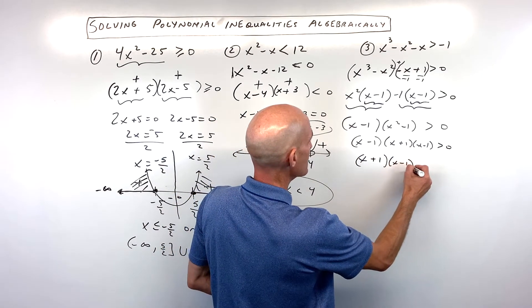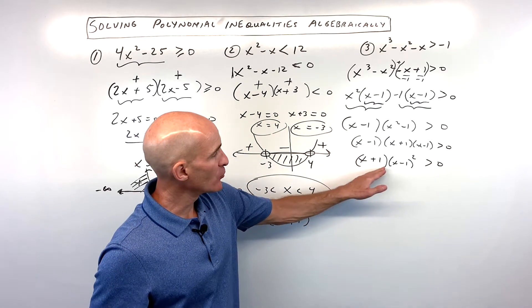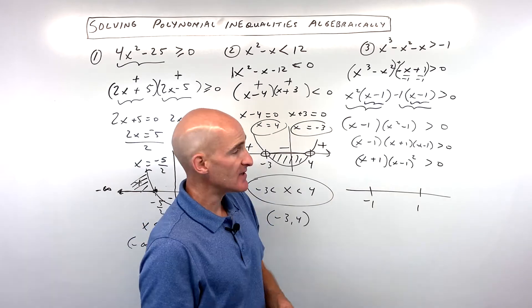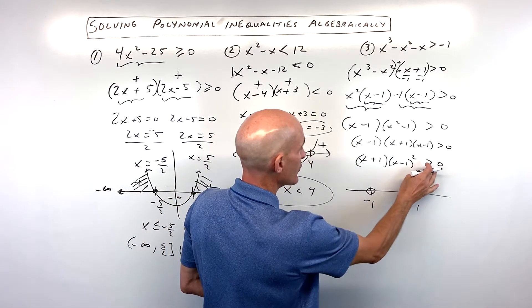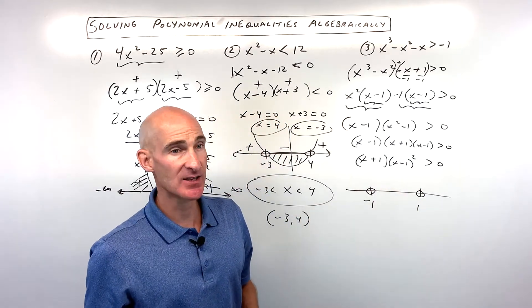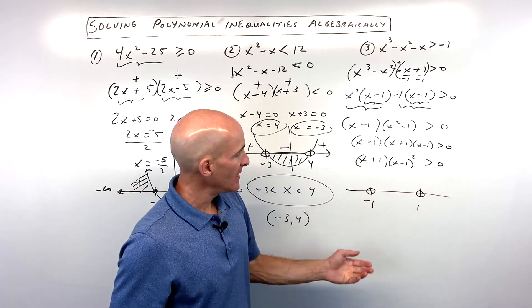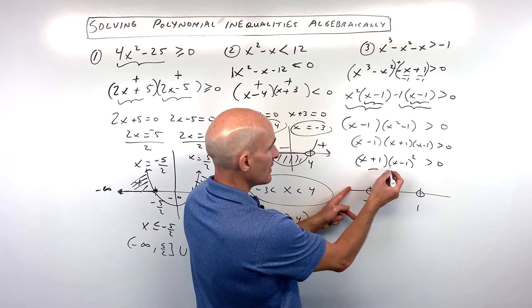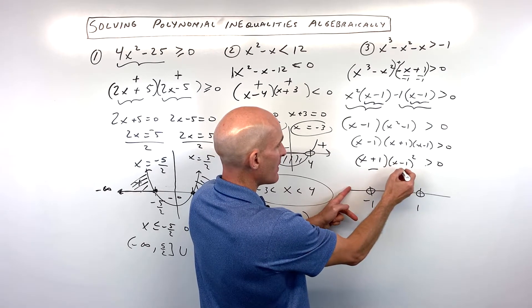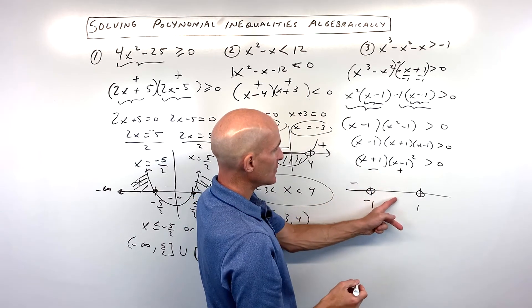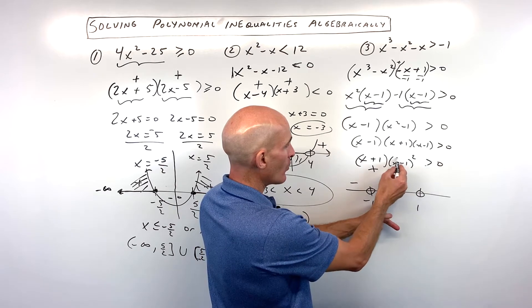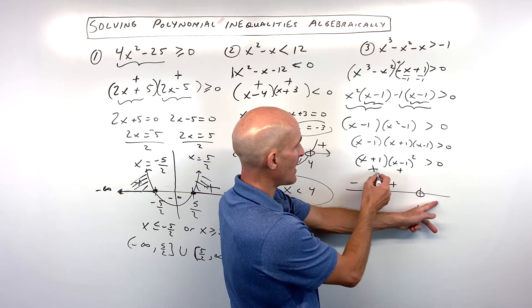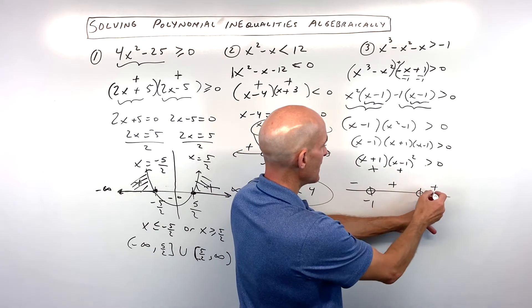Notice there's an (x minus 1) and another (x minus 1), so we can write that as (x minus 1) squared. When we set these groups equal to zero, we get x equals negative 1 and x equals positive 1. We want it greater than zero, so these will be open circles. Now for test points — I'll pick negative 2, zero, and positive 2. For negative 2: negative 2 plus 1 is negative 1, and negative 2 minus 1 is negative 3, but negative 3 squared is positive 9, so negative times positive is negative. For zero: zero plus 1 is positive 1, and since we're squaring (x minus 1), that's always positive — positive times positive is positive. For two: 2 plus 1 is 3 — positive; 2 minus 1 is 1, squared is positive — positive times positive is positive.